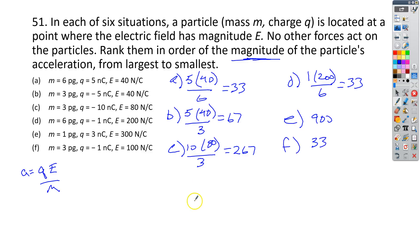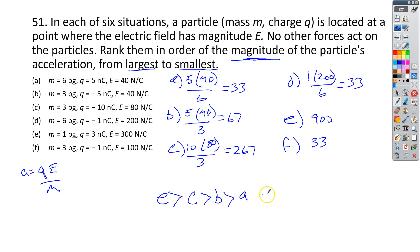We're going to rank these now in order of magnitude from largest to smallest. E is greater than C, which is greater than B, which is greater than A, but A equals D, which equals F. And that is your answer for number 51.